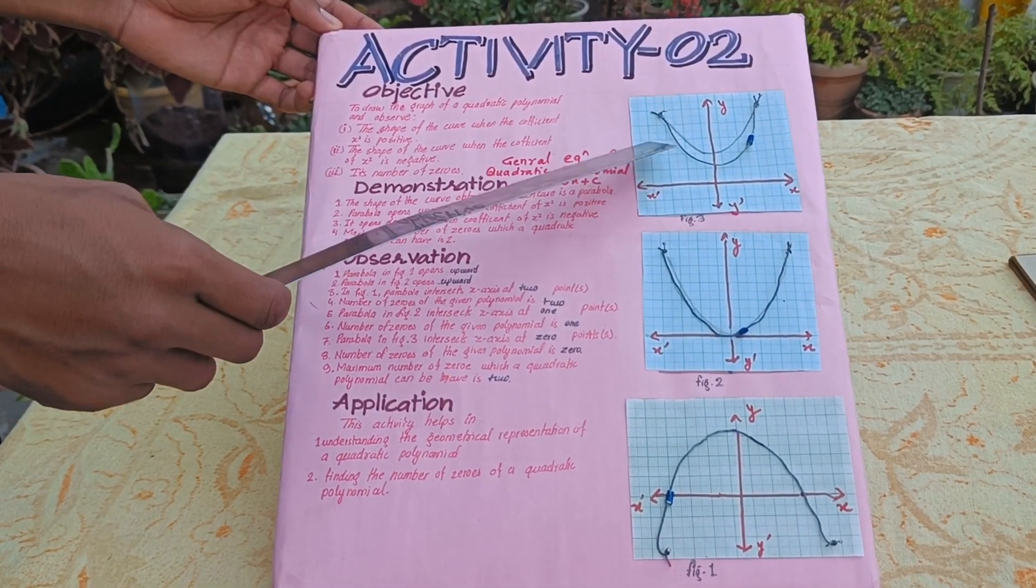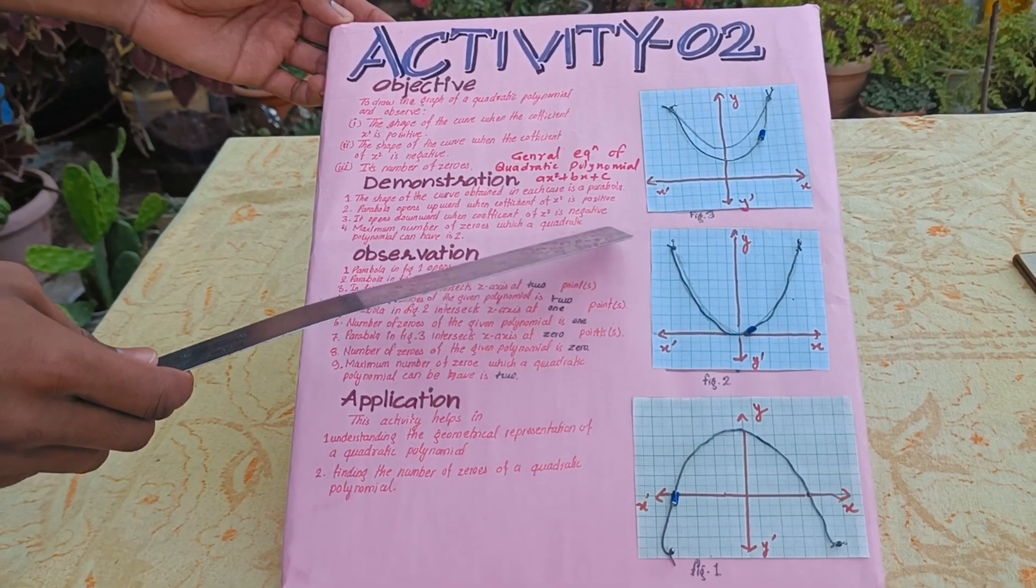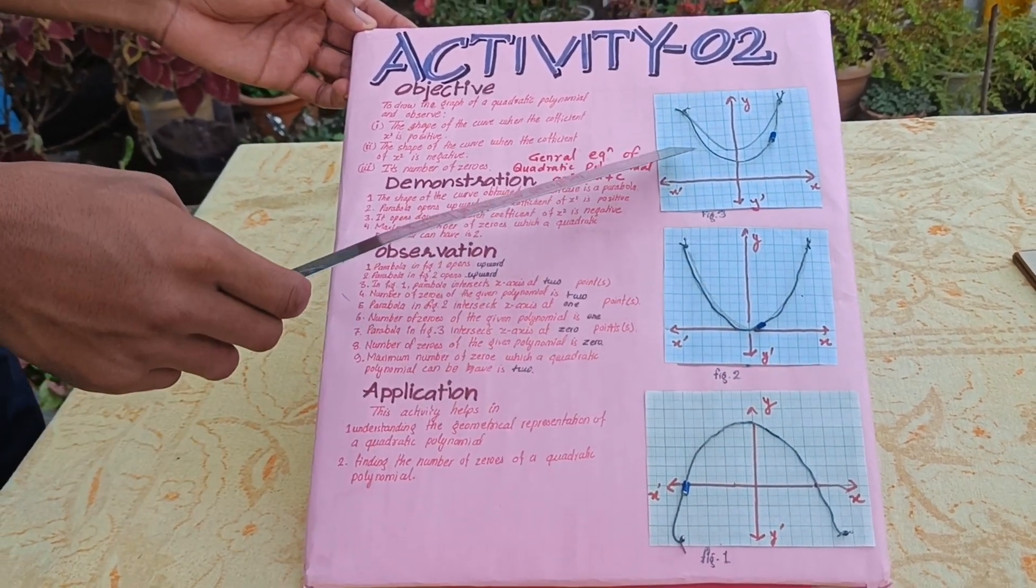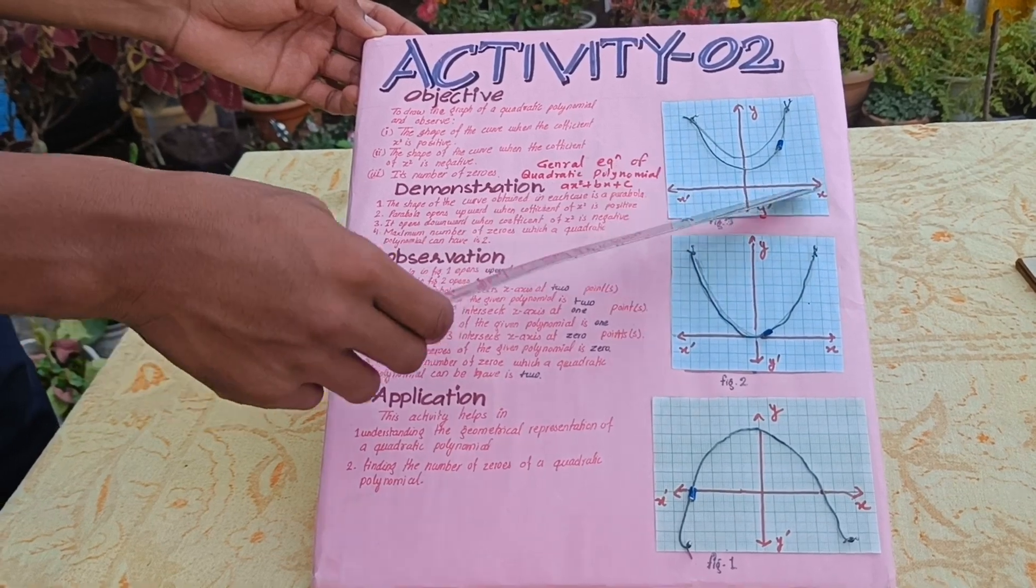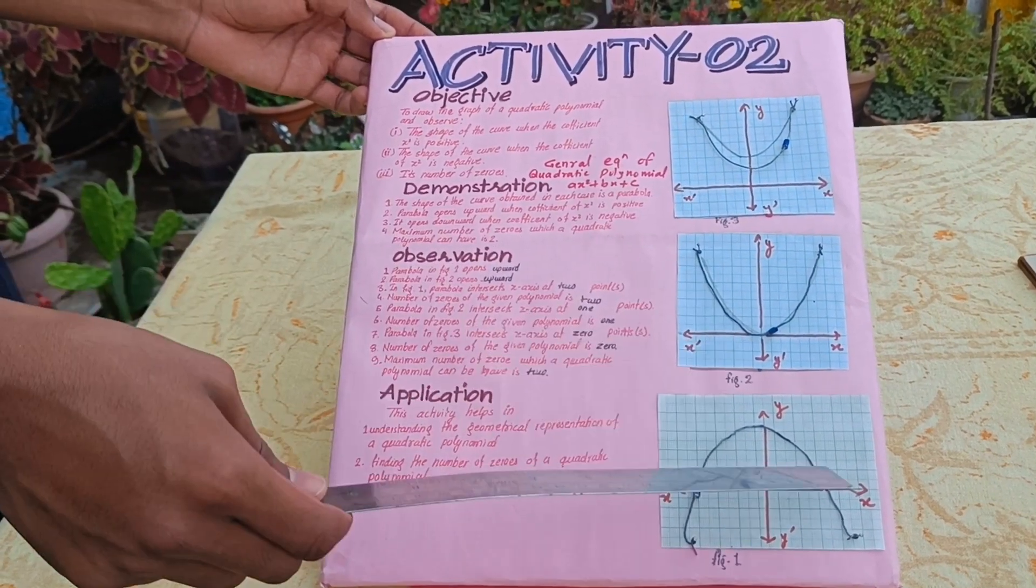So graph of each quadratic polynomial is in the form of parabola. And if a is greater than 0, it is upward, and if a is less than 0, it is downward.